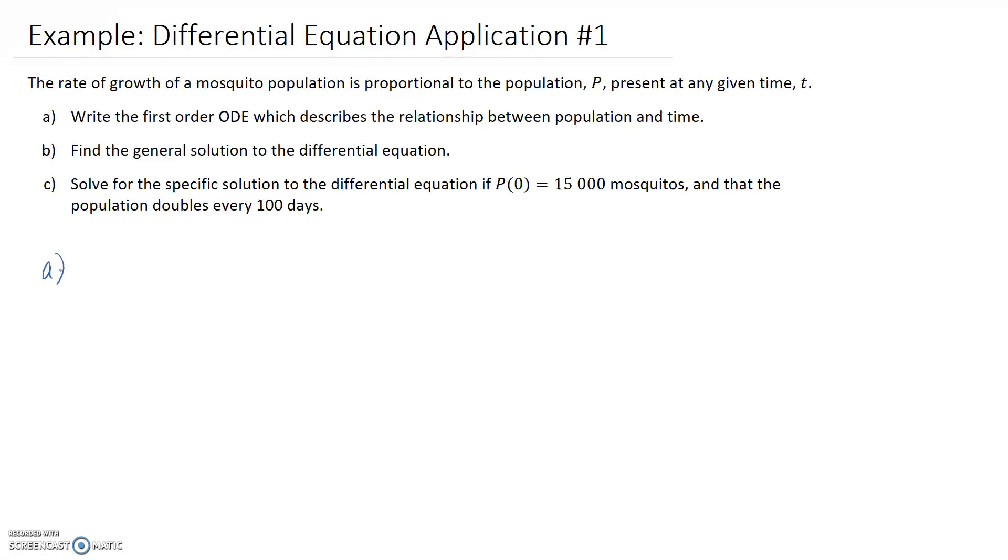We're told that the rate of growth of this population is proportional to the population. Rate of growth can be written as dP/dt because this is the change in population with respect to the change in time.